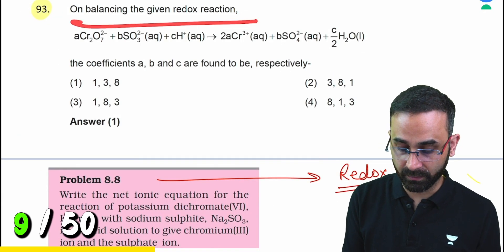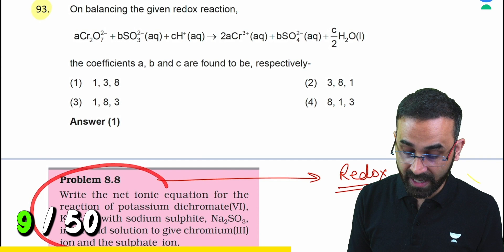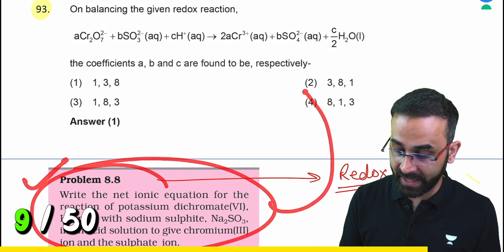On balancing the given redox reaction: this is a direct solved example, solved example problem 8.8 directly from NCERT.